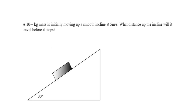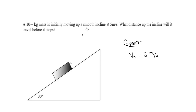Let's solve this dynamics question where we have a block on an incline plane. We're told a 10 kilogram mass is initially moving up on a smooth incline at 5 meters per second. So V0 is 5 meters per second, and we're told it's a smooth incline, meaning we're going to neglect friction — no friction resistance between the block and the incline plane.